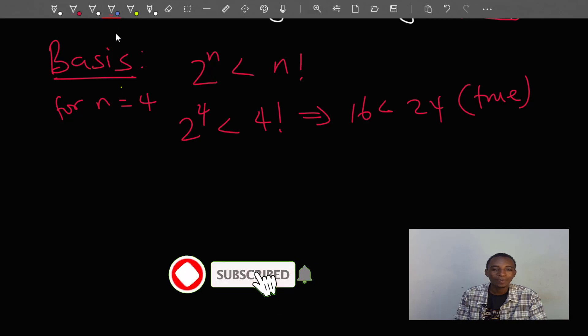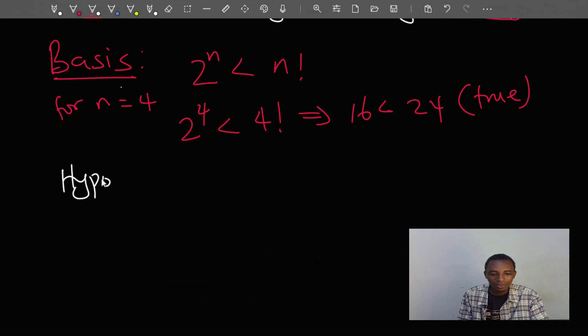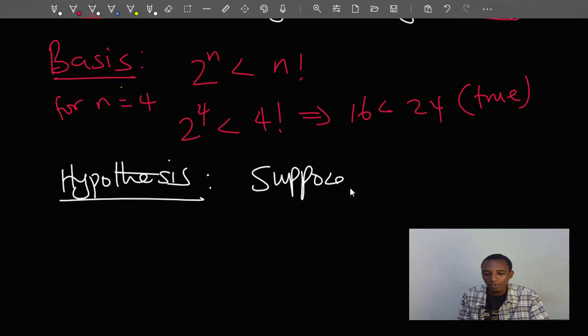So the next step is the induction hypothesis. For the hypothesis or induction hypothesis, instead of choosing a known value, I will have to choose an arbitrary value, and we will suppose that the proposition is true for that value. So I'll suppose that 2 to the power n is less than n factorial.